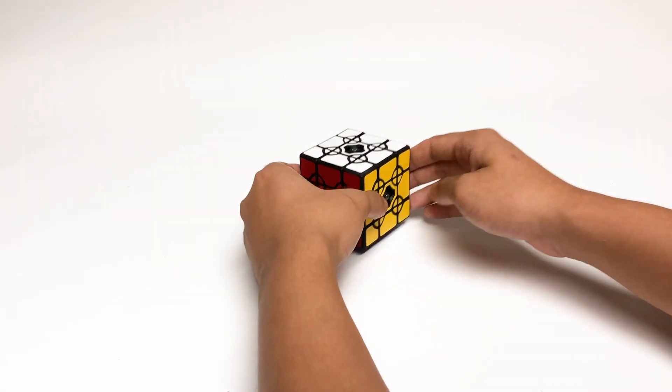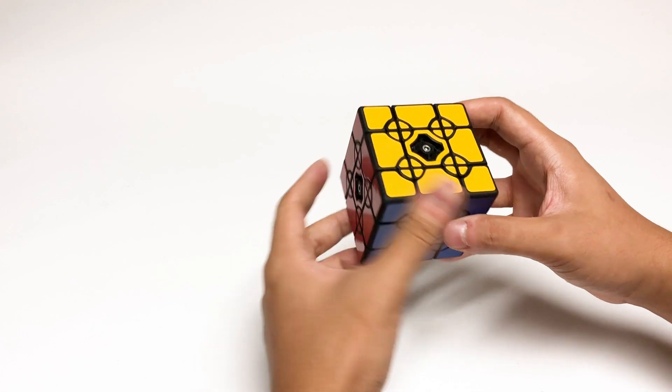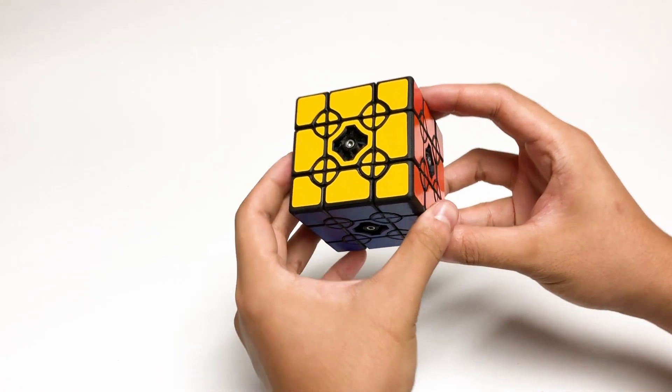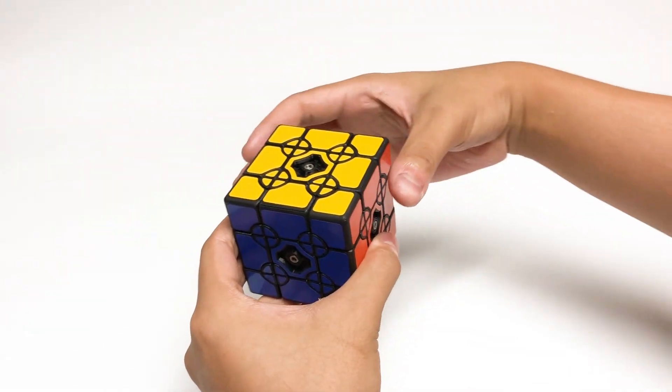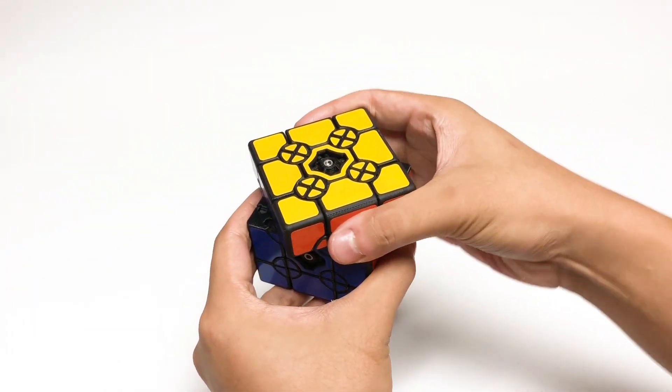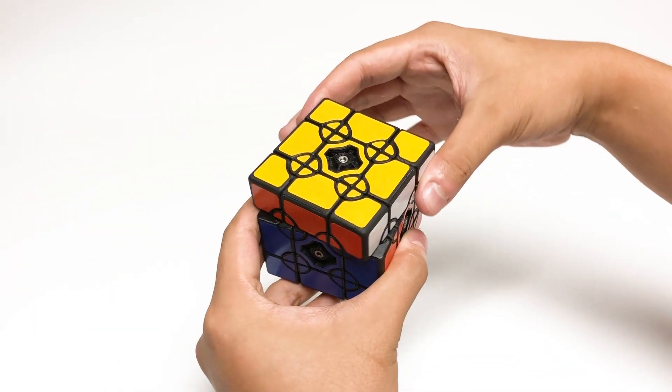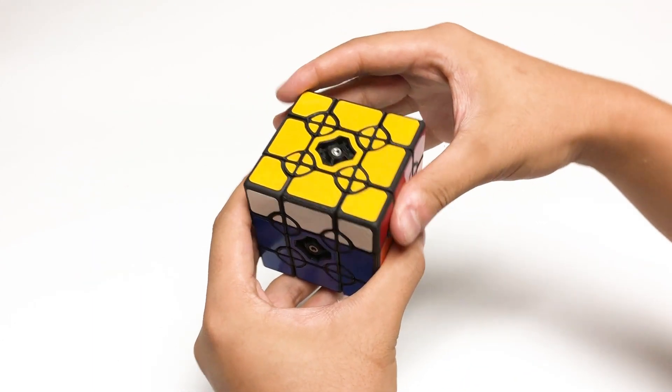This is the Orbit Cube. It is a 3x3 puzzle with a gearing mechanism inside that allows the little circles to orbit around the central sun gear when I rotate a face.